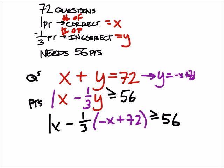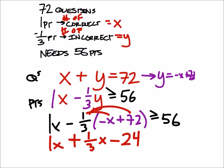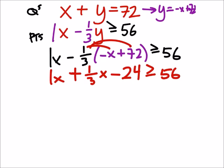So now I'm going to distribute that negative one-third into the parentheses. So I've got positive one-third X, and now this is minus 24. Now what I have on the left side of this inequality or equality, it really doesn't matter which one you do.